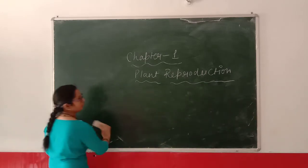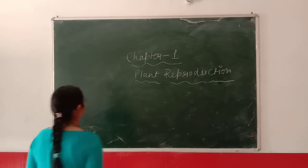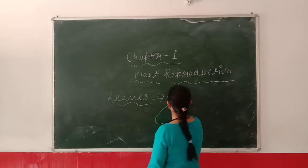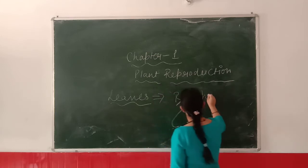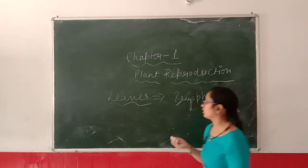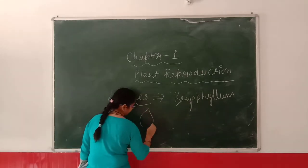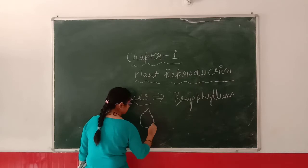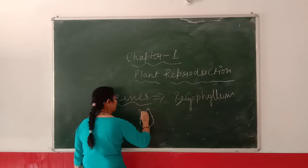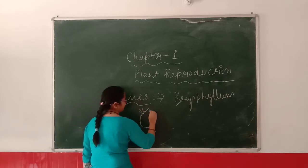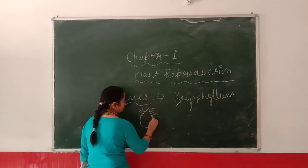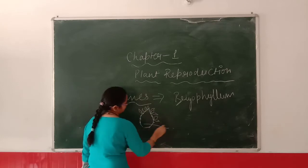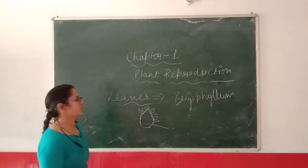Now we will learn about growing a new plant by leaves. Have you heard the name Bryophyllum? The leaves of Bryophyllum have small buds on them. These buds then generate into a new plant. If you sow this leaf in soil, many plants will generate from the same leaf. This is how a new plant generates from the leaf.